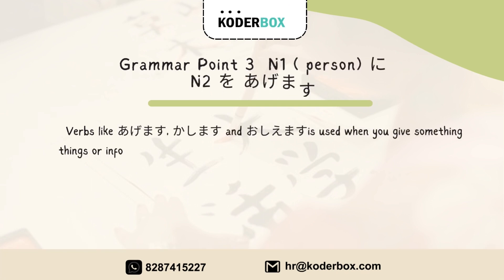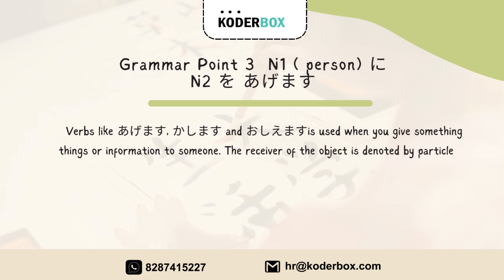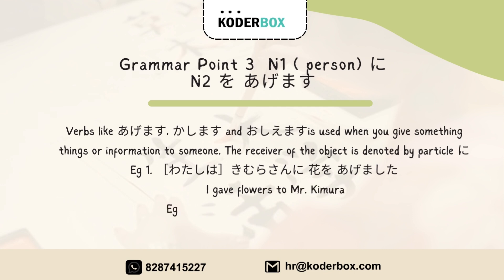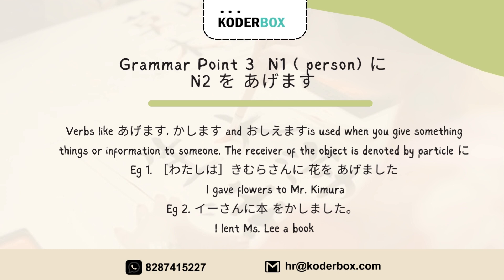Verbs like aagemasu, kashimasu, and oshiemasu are used when you give something or information to someone. The receiver of the object is denoted by particle ni. Example: Watashi wa Kimura-san ni hana wo aagemashita — I gave flowers to Mr. Kimura. Example two: Li-san ni hon wo kashimashita — I lent Miss Li a book.